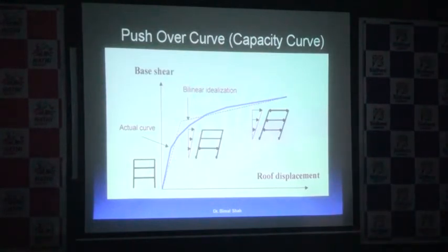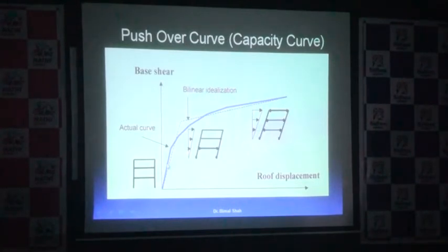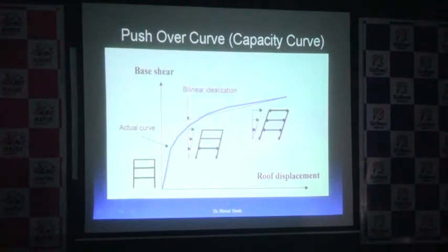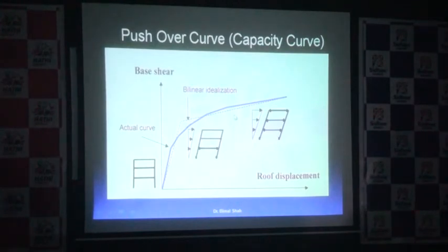Every building has certain capacity — how much can it deform before it collapses depends on this capacity curve. If we talk about only linear elastic behavior, we are going only up to the yield point. Beyond this, we go into the inelastic or non-linear state. This capacity curve is sometimes idealized into a bi-linear behavior — not a smooth curve, but instead converted into two parts: one is the linear part extended to the yield point, and then another linear part which is usually about 10% slope upward in the non-linear part. This is known as bi-linear idealization, with one elastic and one inelastic behavior.